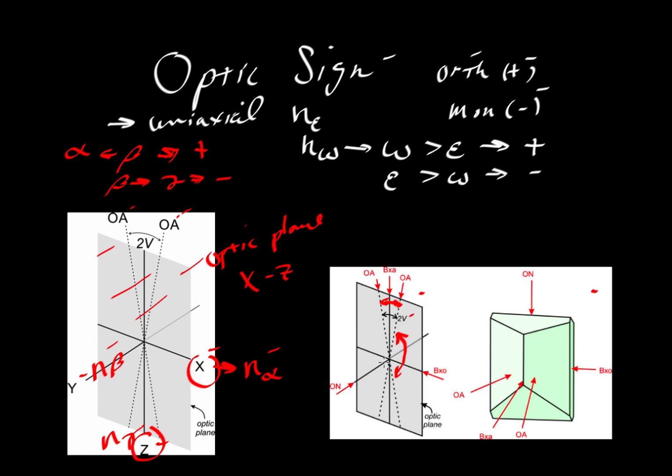If we're looking down the acute angle, we call it the Bxa. If we look down the obtuse angle, it's the Bxo. These are directions that bisect these angles. The Bxo bisects the obtuse angle, and the Bxa bisects the acute angle.